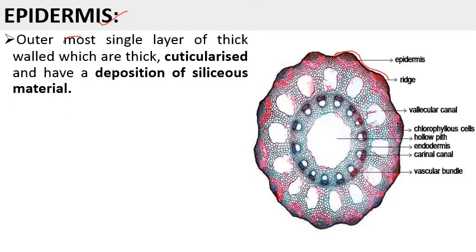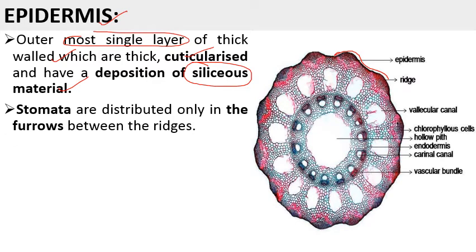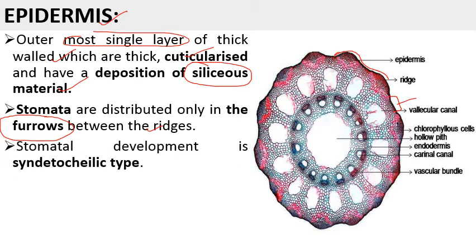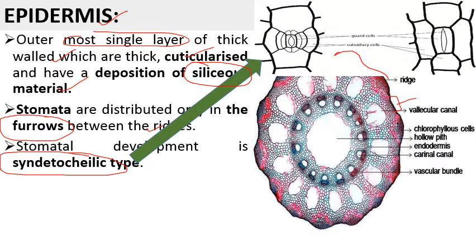The outermost layer is the epidermis, which is a single layer made up of thick-walled cells. It is interrupted by some sunken stomata. The cells are cuticularized and have a deposition of silica, which provides toughness to the stem. Stomata are distributed only on the furrow portion between the ridges — this depressed portion — and the stomata are sunken. The development of stomata is of syndettochelic type, where the stomatal initial gives rise to both the guard cell and subsidiary cell from a single stomatal initial.